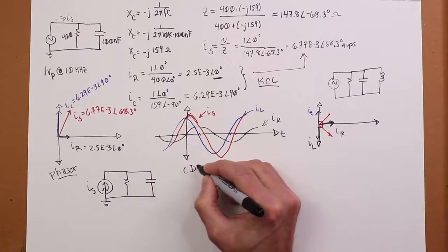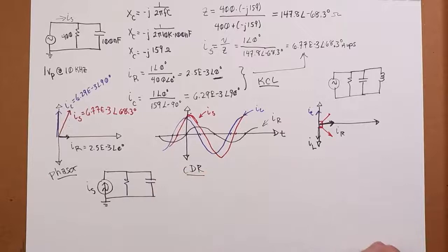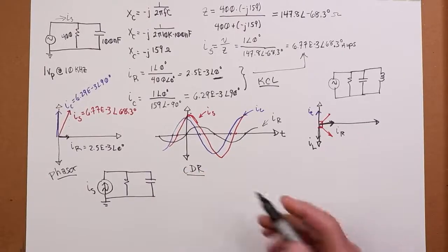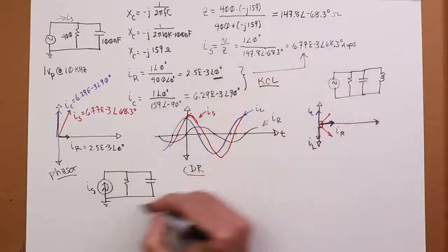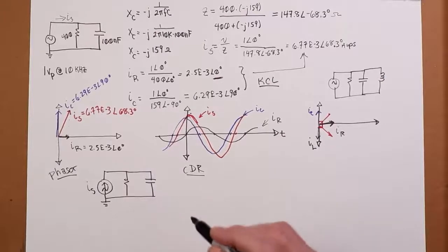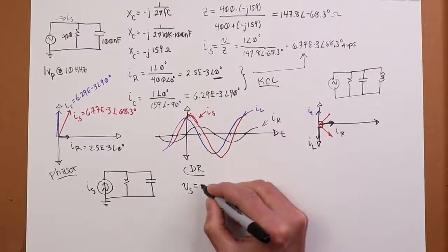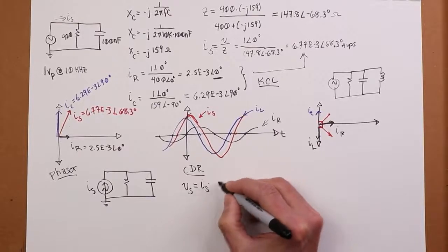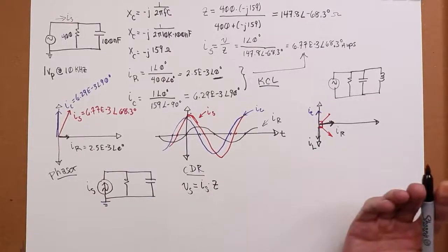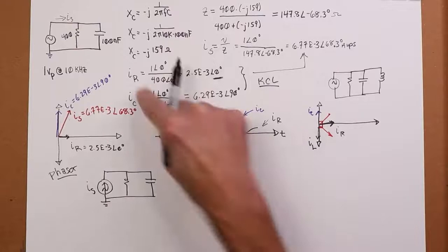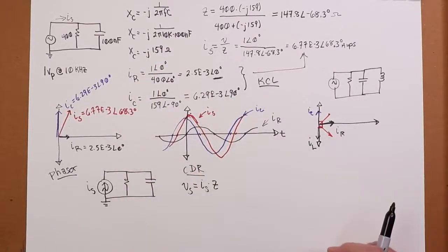Knowing what IS is, knowing what the source current is, you could immediately do a current divider rule. Find these two currents. You could also do what we did up here, which is find the Z value, and then knowing Z, you could find the source voltage by just saying it's your source current times Z. Once I have that, I could do the same trick over here of taking that voltage and dividing by the associated resistance and reactances.